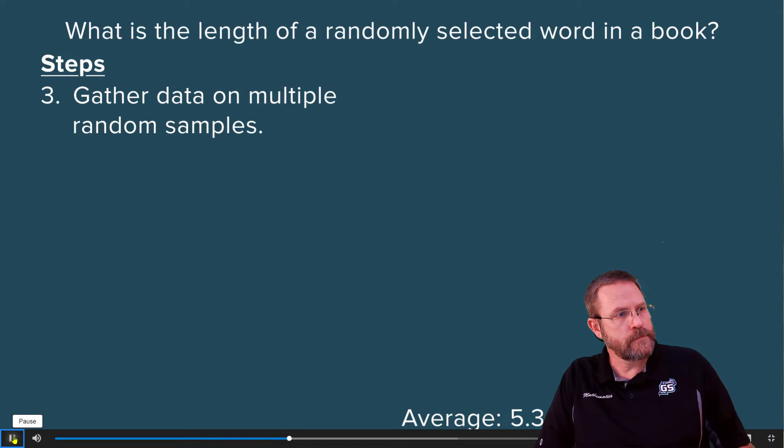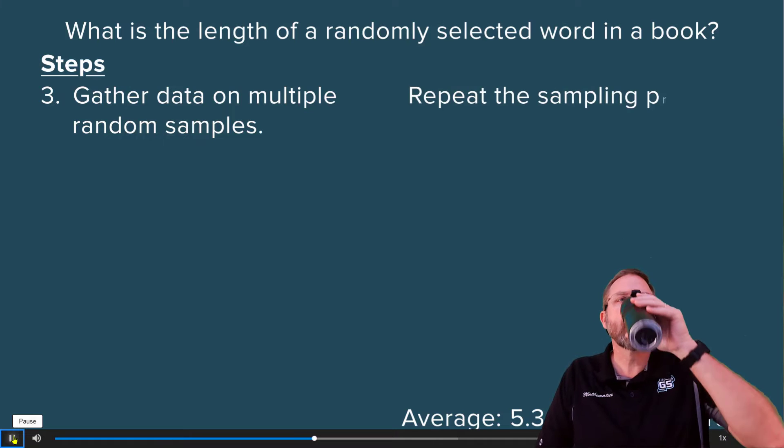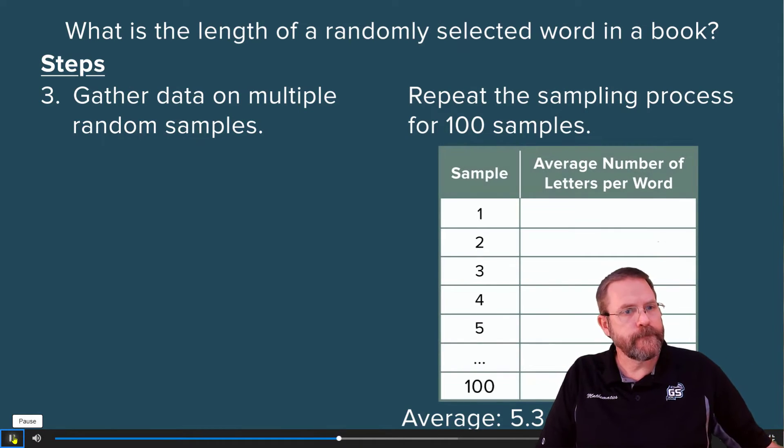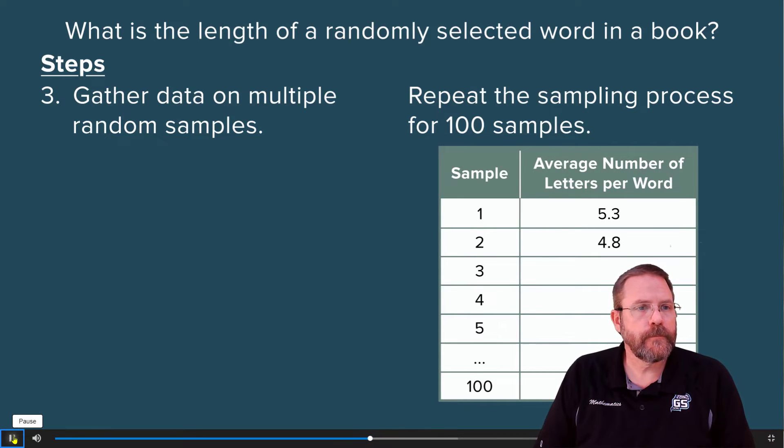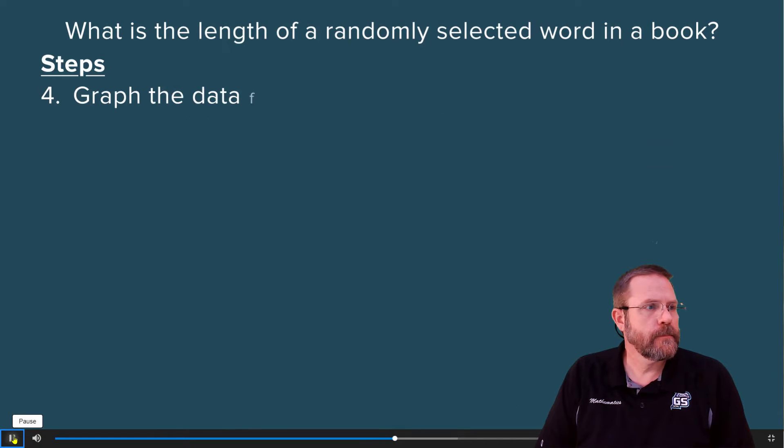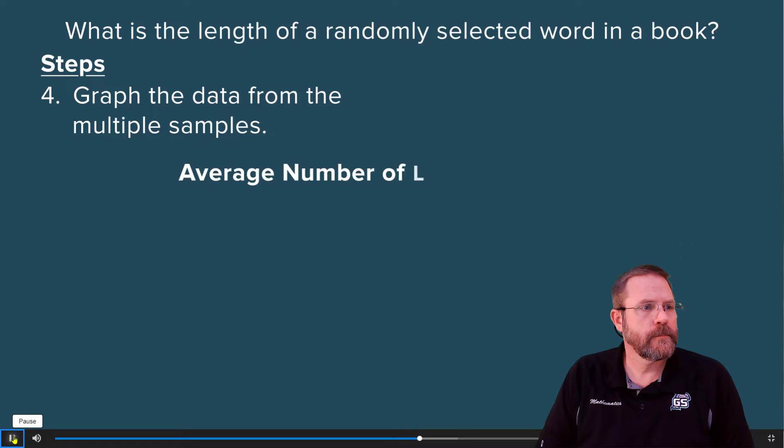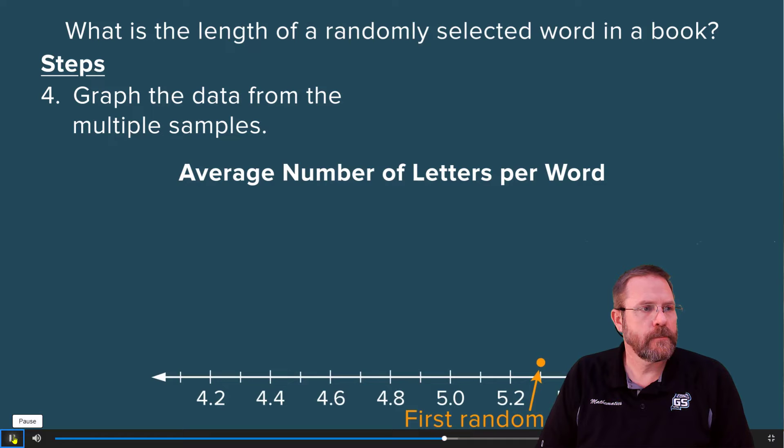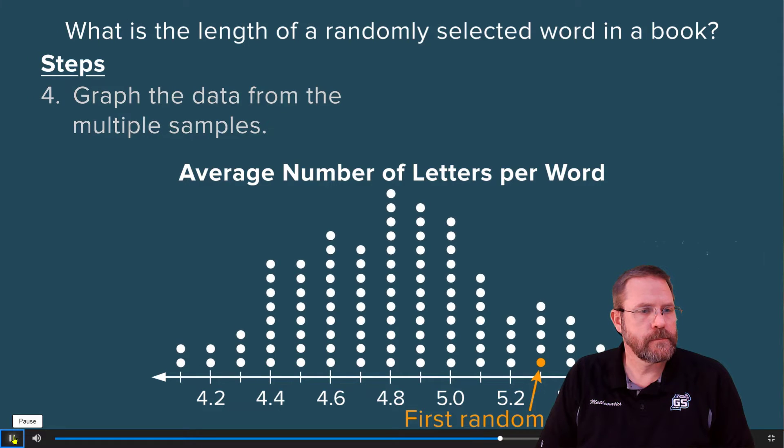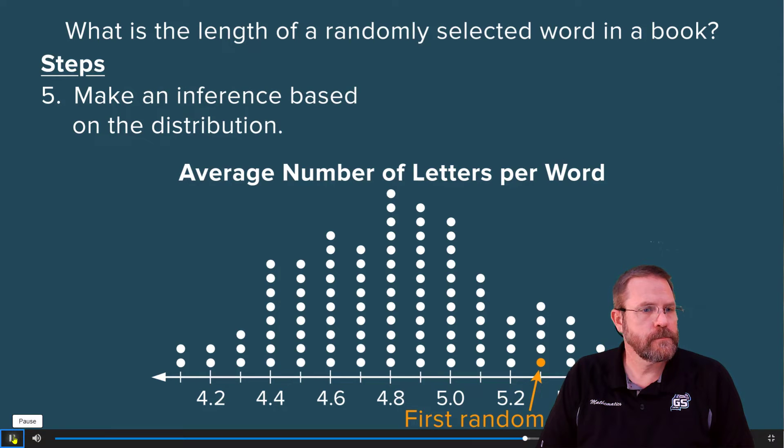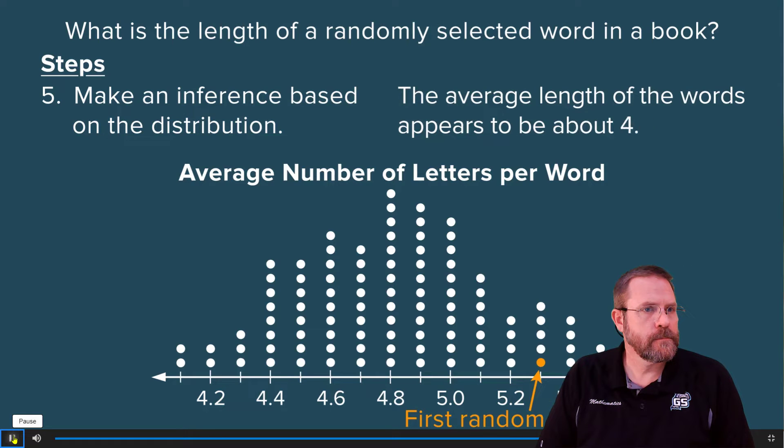One way is to take multiple samples of the same type and size. Repeat the process to gather 100 samples representing 100 different pages from the book. Then find the average number of letters per word for each of the 100 samples. Next, display the data from the multiple samples using a dot plot. Place a dot at 5.3 to show the average word length of the first sample. Then graph the values for the remaining samples. Now you can make an inference about the average number of letters per word based on the shape of the distribution. The dot plot shows that the average length of the words in the book appears to be concentrated around 4.8 letters. Notice that the average from the first sample is greater than the averages from most of the other samples. Generating multiple samples more accurately represents the average length of a word in the book than the result of a single sample.